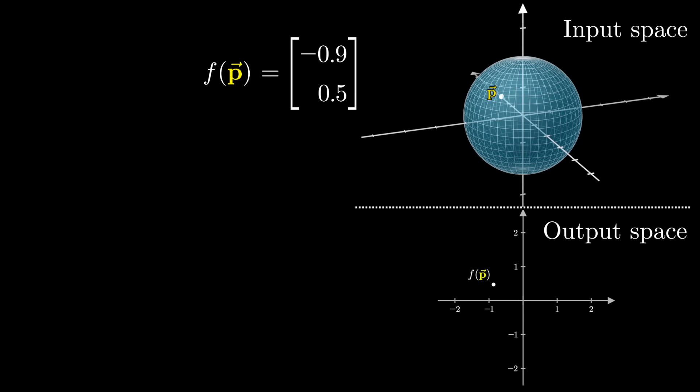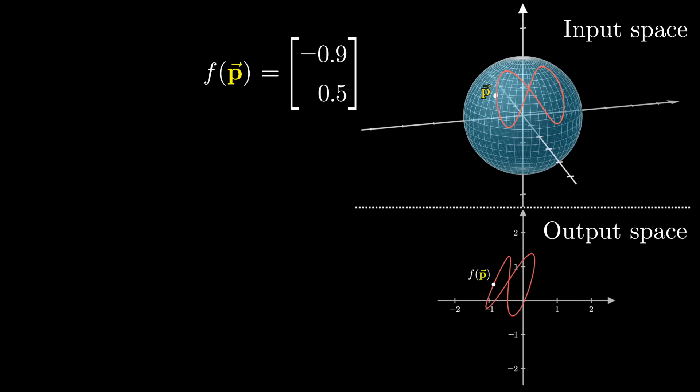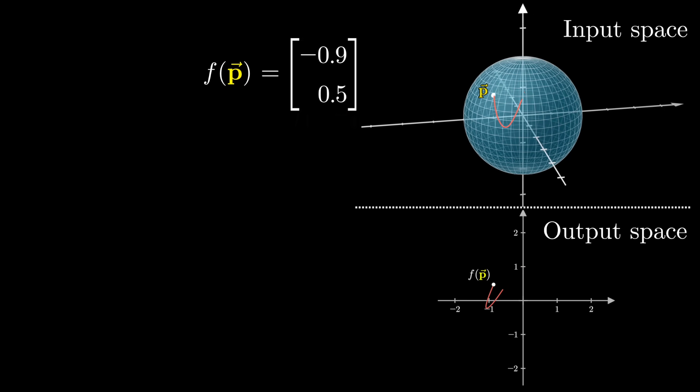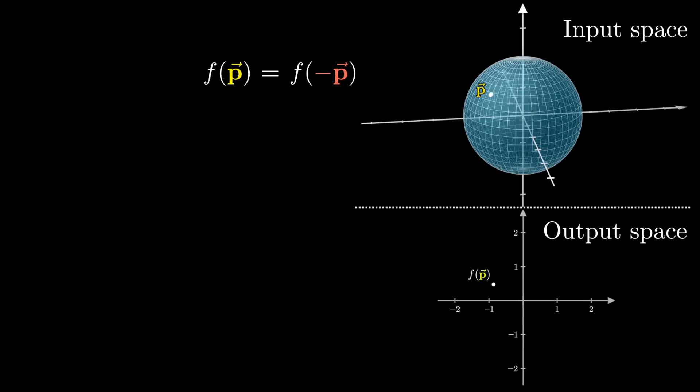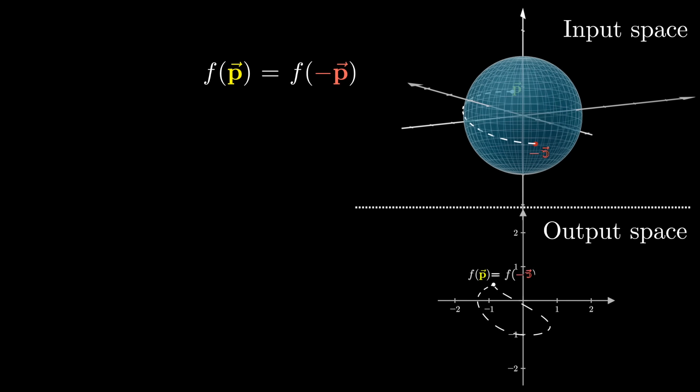you want to show that no matter what crazy choice of function this is, as long as it's continuous, you'll be able to find some point p so that f of p equals f of negative p, where negative p is the antipodal point on the other side of the sphere.